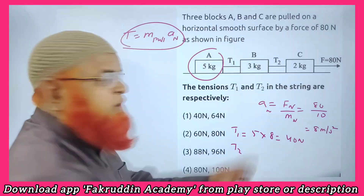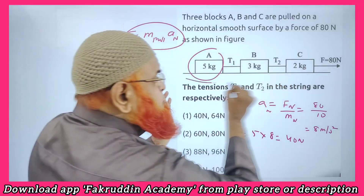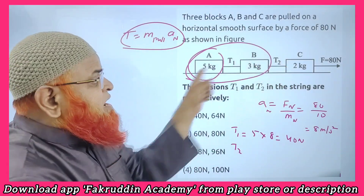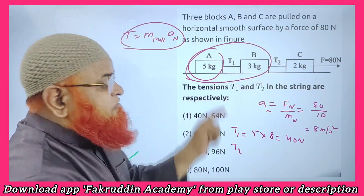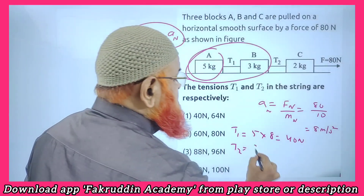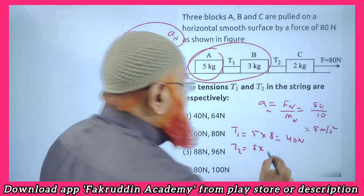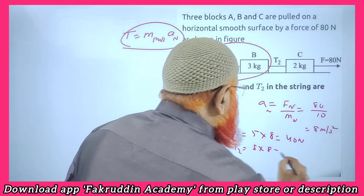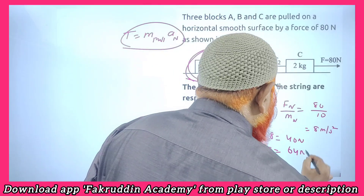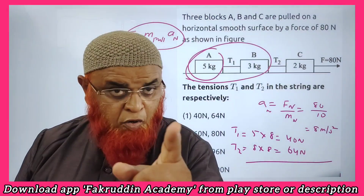Next, tension T2 you need to find out. Masses pulled by the tension T2 is 5 plus 3, which is 8. And acceleration is again 8. So your answer is nothing but 64 N. That's it — so simple it is.